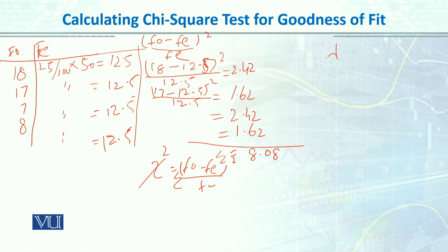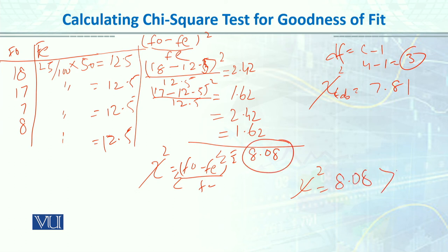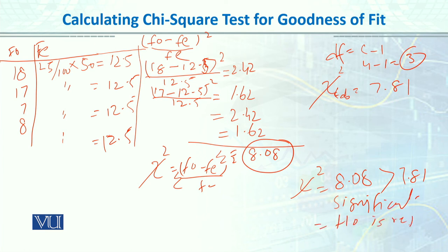Our calculated chi-square value is 8.08. With 4 categories, degrees of freedom = 4 − 1 = 3. The critical value at alpha = 0.05 with df = 3 is 7.81. Since 8.08 is greater than 7.81, our results are significant. Just as in hypothesis testing, if the calculated value exceeds the table value, results are significant, and we reject the null hypothesis.